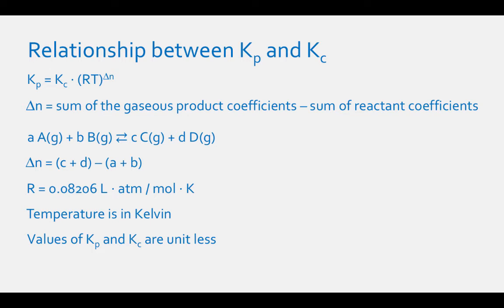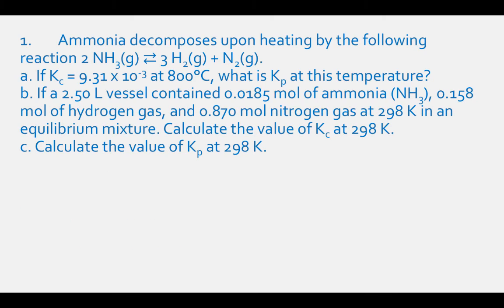Let's work on some problems. Problem 1: Ammonia decomposes upon heating: 2NH3 gas in equilibrium with 3H2 gas plus N2 gas. Part A: If Kc equals 9.31×10⁻³ at 800°C, what is Kp at this temperature? Part B: If a 2.50-liter vessel contains 0.0185 mol NH3, 0.158 mol H2, and 0.870 mol N2 at 298 K in an equilibrium mixture, calculate Kc. Part C: Calculate Kp at 298 K.